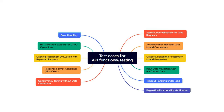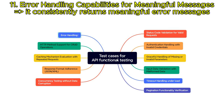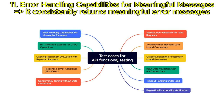Error handling capabilities for meaningful messages: evaluate the API's error handling by intentionally causing errors, such as invalid inputs or unexpected situations, and confirm that it consistently returns meaningful error messages for troubleshooting.